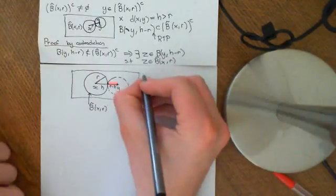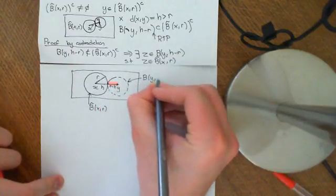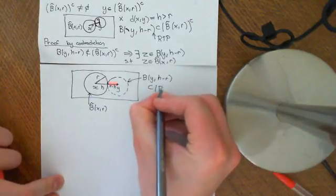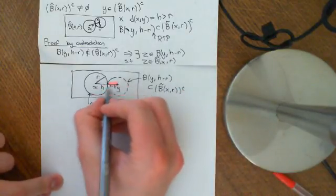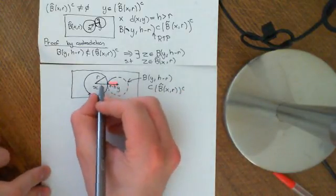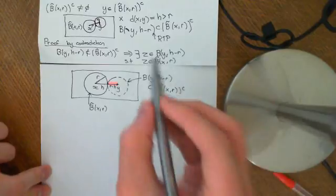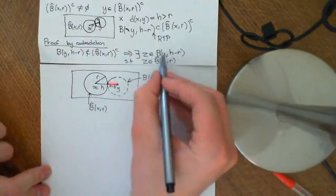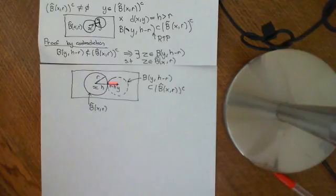What I want to show is that this open ball centered around Y of radius H minus R is completely contained within the complement of the closed ball — no point of this open ball is in the closed ball. The opposite of that, if we're doing a proof by contradiction, is to say there exists some point which is in this open ball and which actually is also in the closed ball. We suppose the opposite of what we want to prove and show it leads to a contradiction.